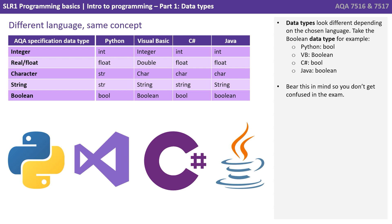Just to recap here, different languages, same concept. Obviously, you're going to be studying different languages and your exam paper will be in different languages. Data types look different depending on the chosen language. Take the Boolean data type for example. It's BOOL with a lower B in Python, the full word Boolean in VB. Bear this in mind so you don't get confused in the exam.